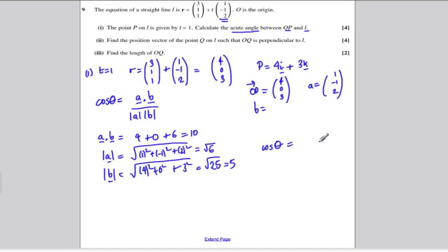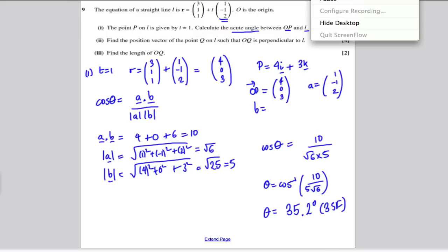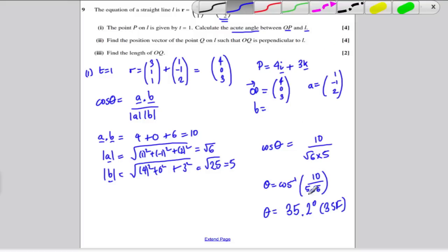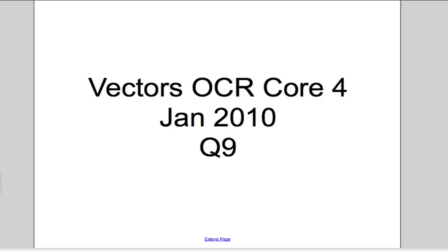Now we just plug numbers into the formula. Therefore, cos θ is A dot B, which is 10 divided by √6 times 5. We work it out on our calculator. To work out the angle, we take the inverse cos of 10 over 5√6. So we do 10 divided by 5√6, and we take the inverse cos of that answer, and we get that the angle θ should be equal to 35.2 degrees to 3 significant figures. Actually, just looking at my calculator, that was rounded to 35.3 to 3 significant figures.